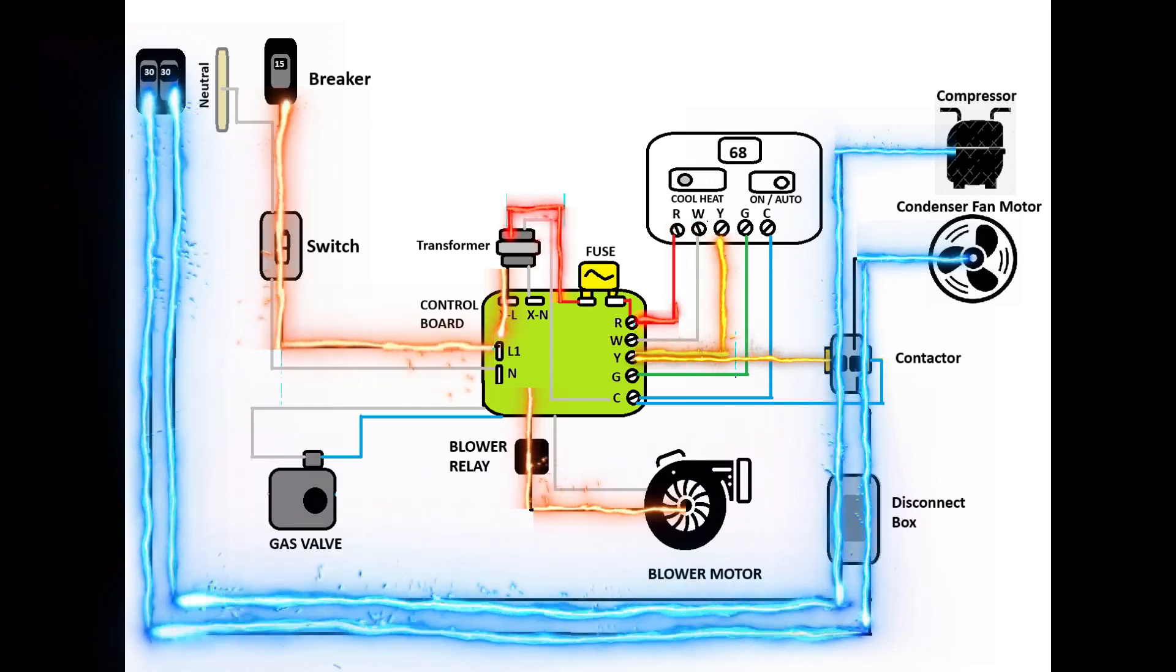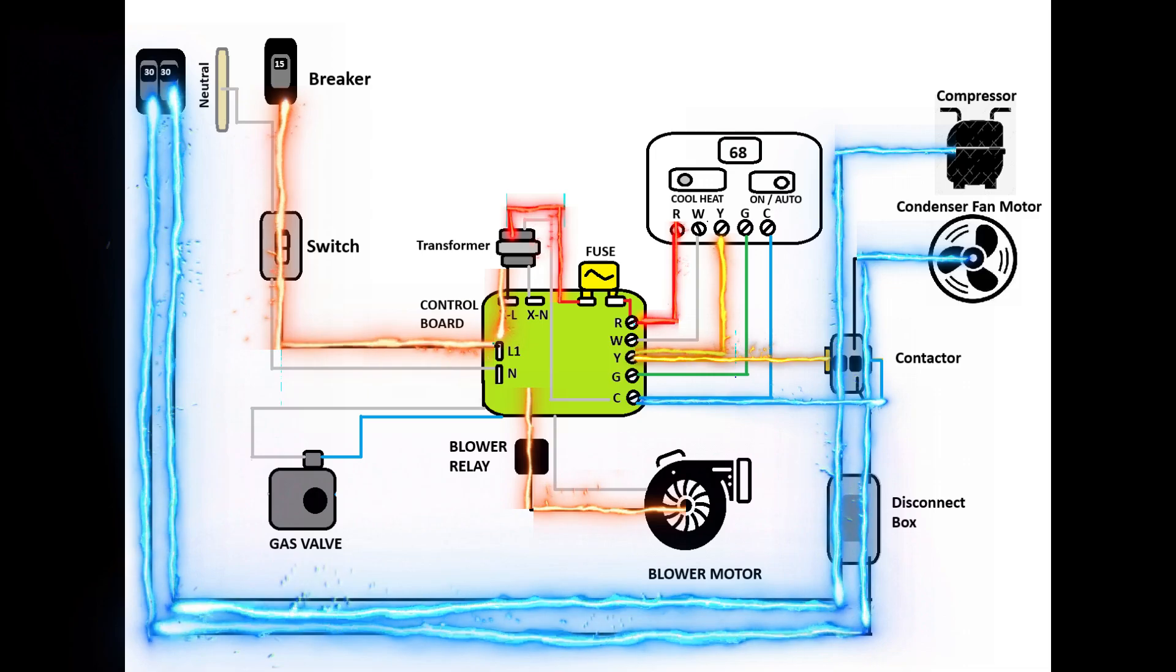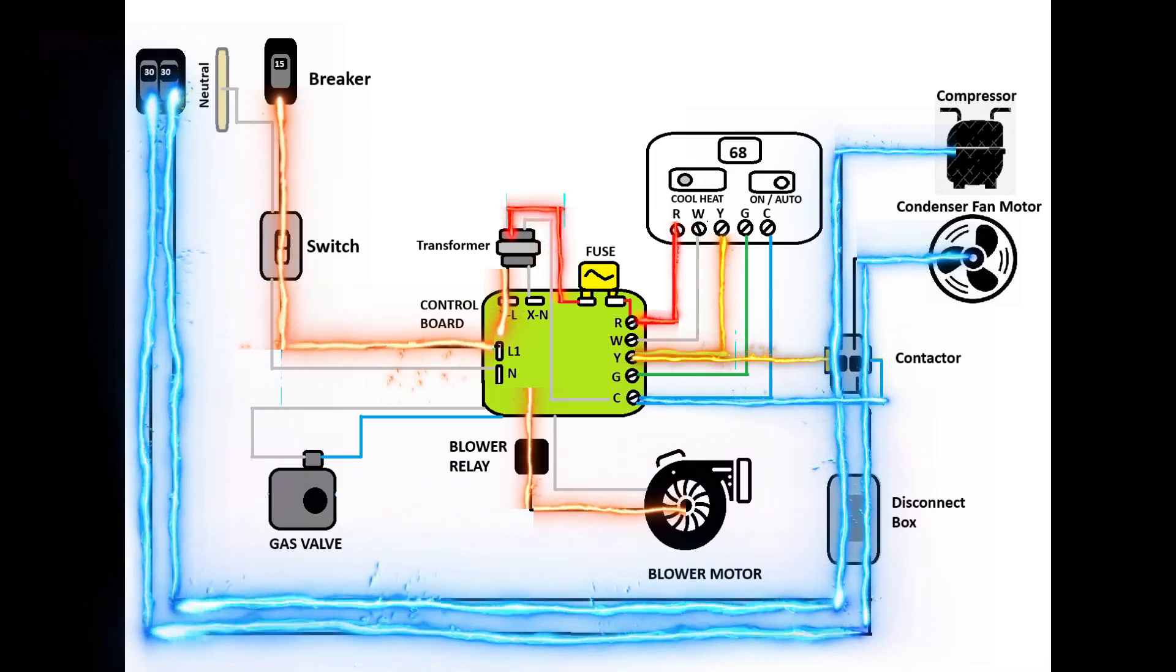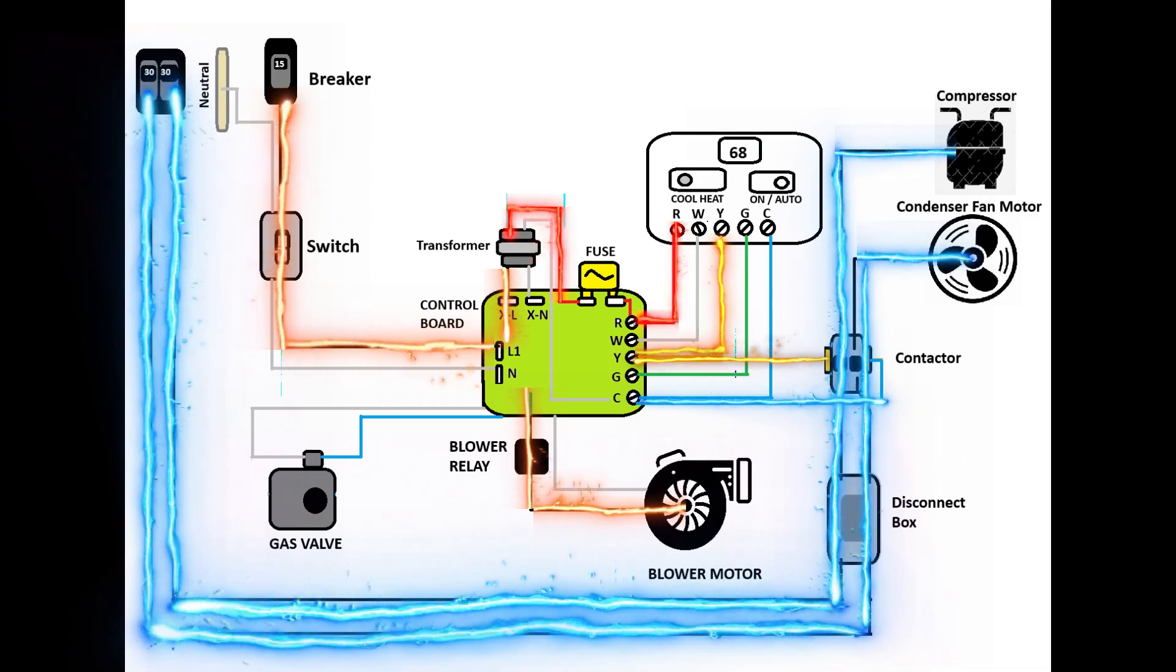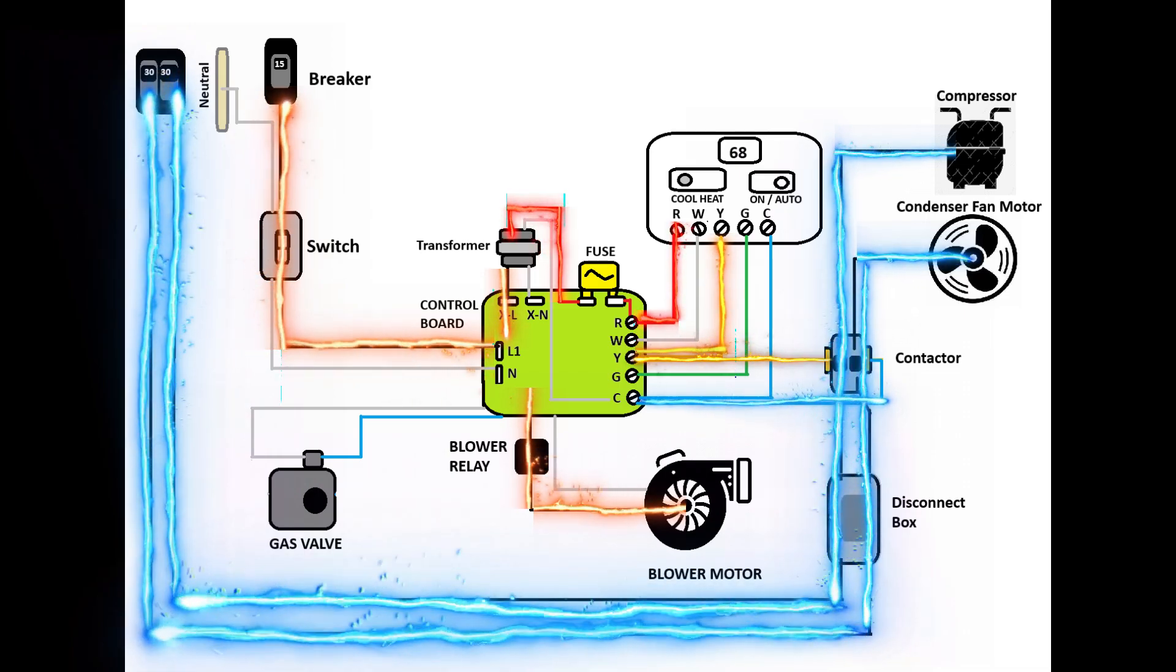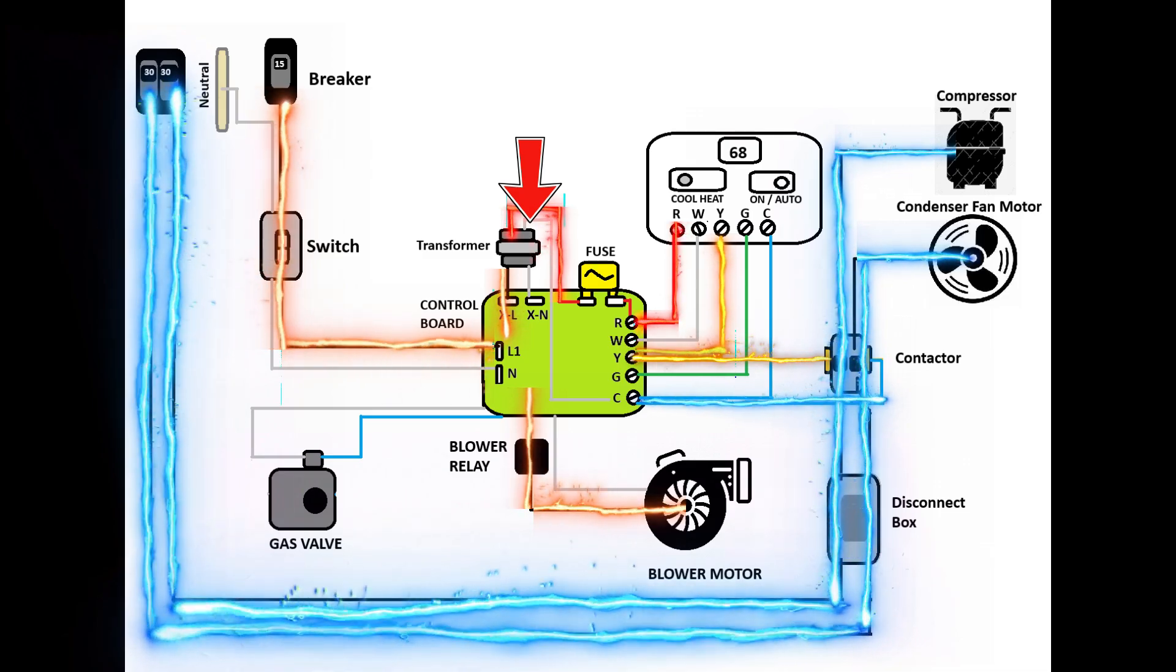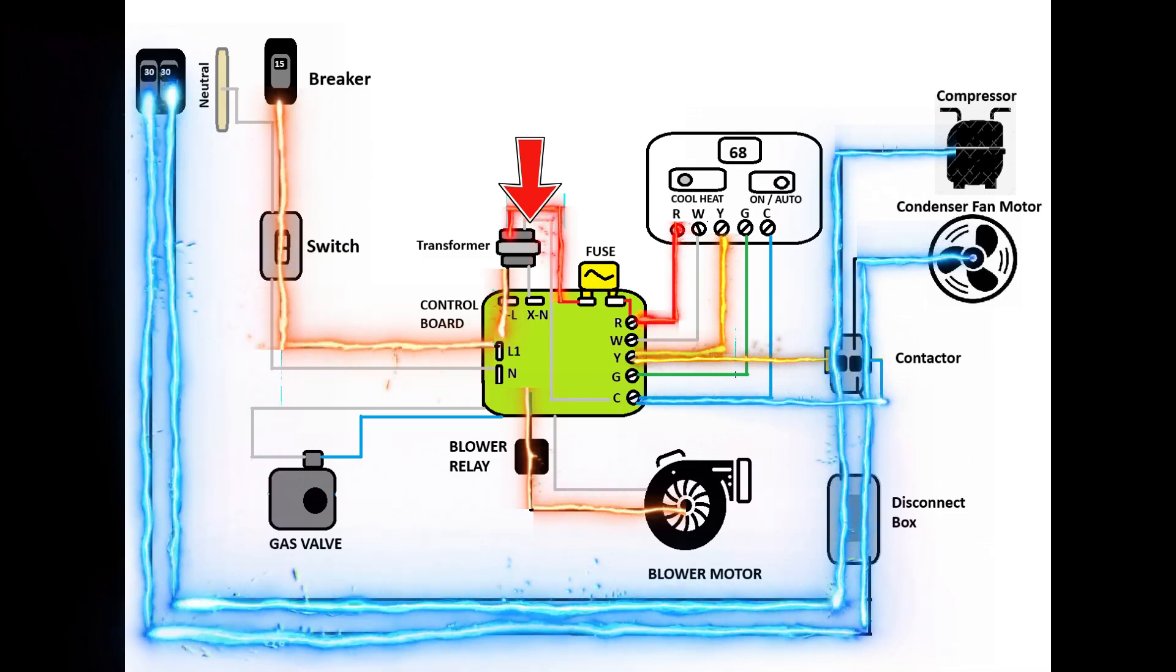Now after the 24 volts goes through our contactor coil, it returns on another wire that goes back to common on the control board. And again, this can be any color. It could be red, it could be white, it could be blue, but it's going back to common. And from common on the control board, it eventually goes back to common on the transformer, and that completes our entire cooling circuit.